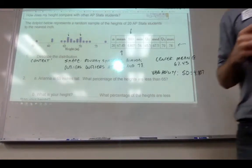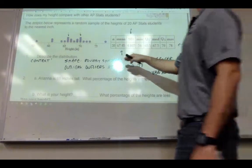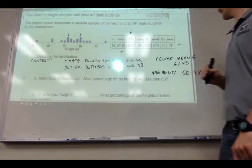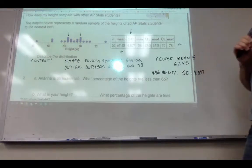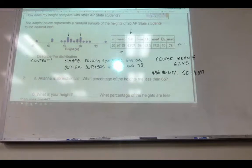Wait, so how would you write this sentence? Like, how would you want it? This distribution is roughly symmetric and bimodal, with outliers of 56 and 78. It has a mean of 67.45 and a standard deviation of 4.807. That's all you have to say?